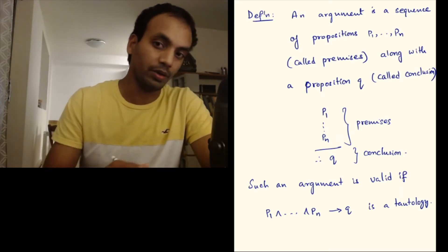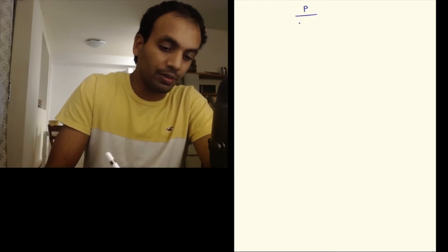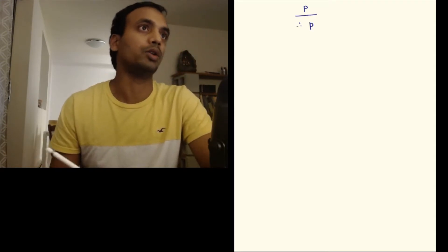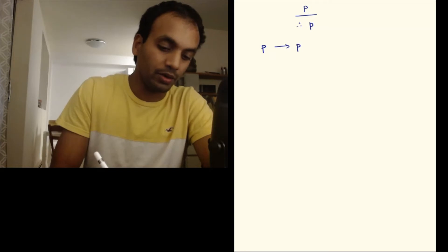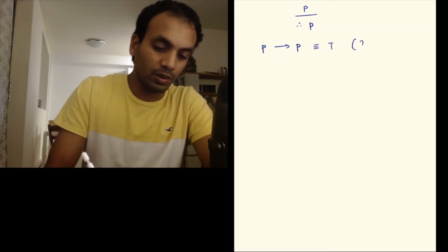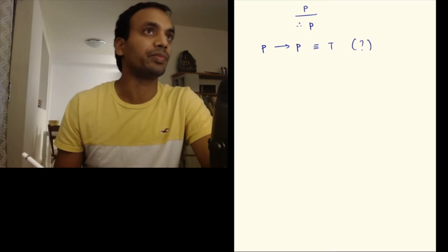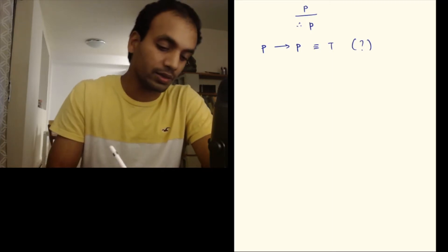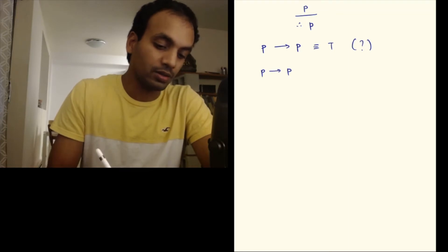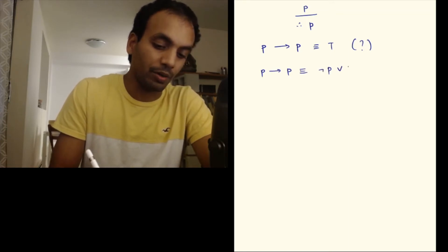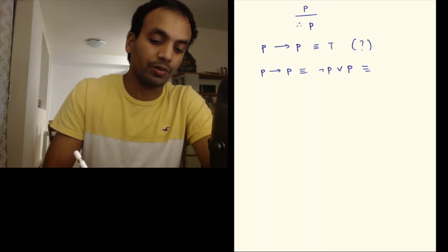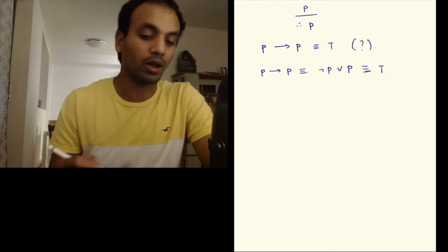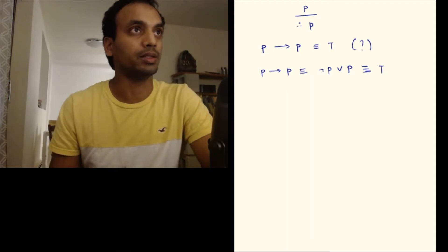The simplest example we can think of is p, therefore p. The premise is p and the conclusion is also p. So for this to be valid, you need p implies p to be true. Is this always true? It certainly looks obvious, so let's formally derive this. p implies p is equivalent to negation p or p using the conditional identity. And we know that negation p or p is always true. So using laws of propositional logic, we can prove that this is in fact a tautology.